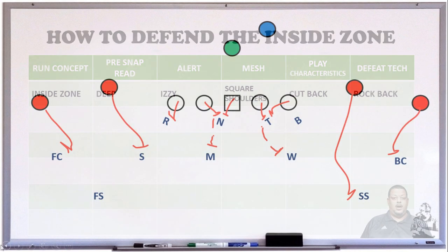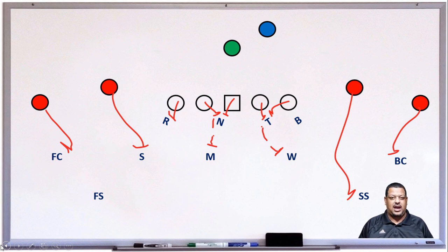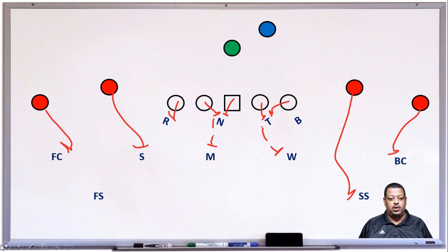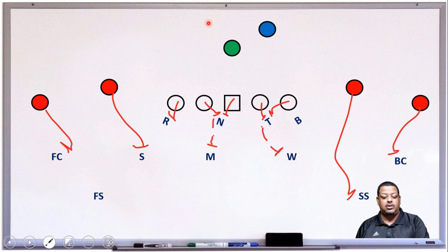Now we're at the whiteboard. I pre-drew the blocking assignments so we don't waste time. When we look at inside zone, the very first thing we're looking for is 'deep.' Look at this running back right here — how deep he is. He's deeper than the quarterback, indicating he's going to run inside zone.